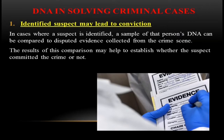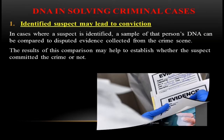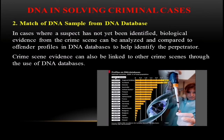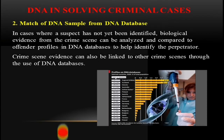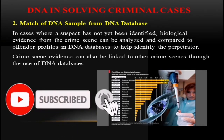DNA helps in solving criminal cases in several ways. First, it plays a crucial role in identifying a suspect which may lead to conviction. Where a suspect is identified, a sample of their DNA can be compared to the disputed DNA evidence collected from the crime scene, and the results may help establish whether the suspect committed the crime. Second, if a country has a DNA database, law enforcement can compare crime scene DNA evidence against offender profiles in that database to help identify the perpetrator.